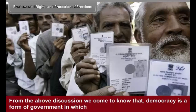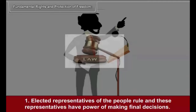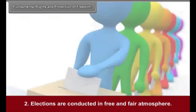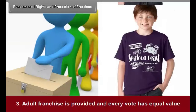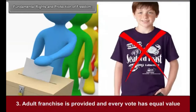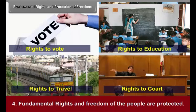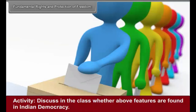From the above discussion, we come to know that democracy is a form of government in which: first, elected representatives of the people rule and these representatives have the power of making final decisions; second, elections are conducted in a free and fair atmosphere; third, adult franchise is provided and every vote has equal value; fourth, fundamental rights and freedoms of the people are protected. Discuss in the class whether these features are found in Indian democracy.